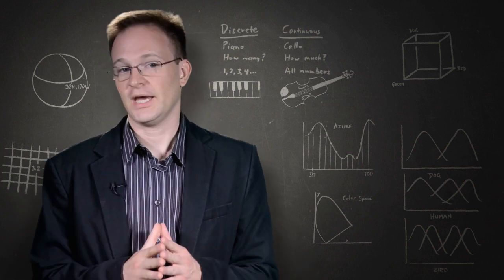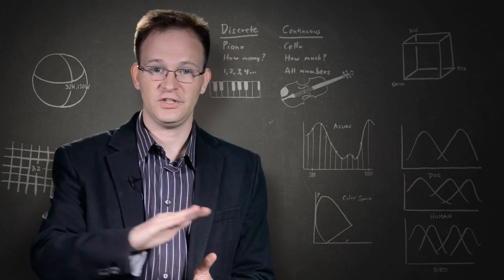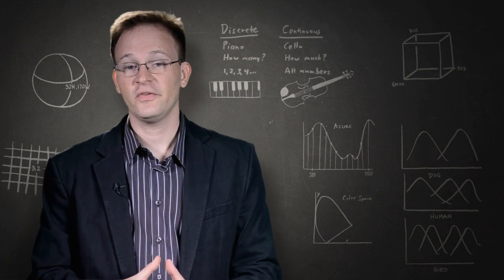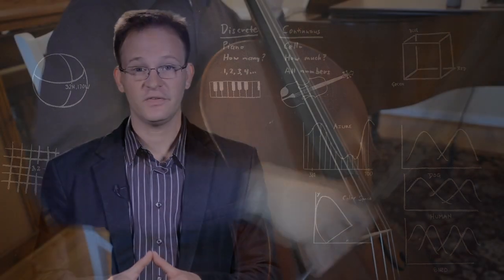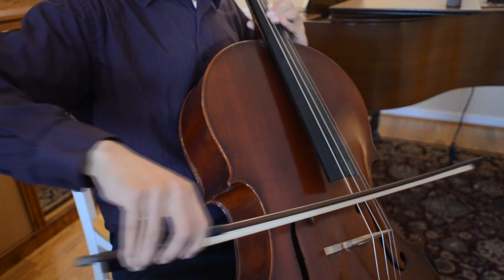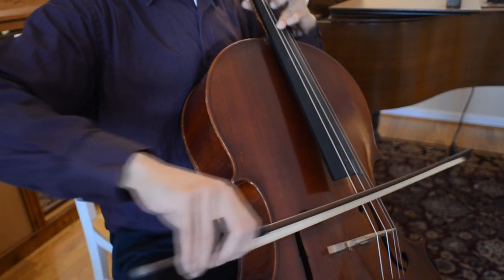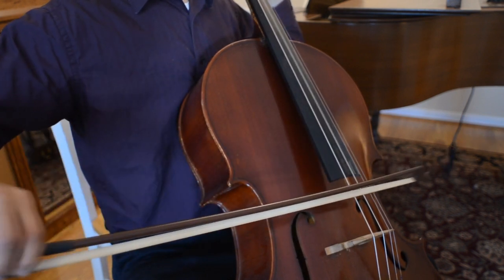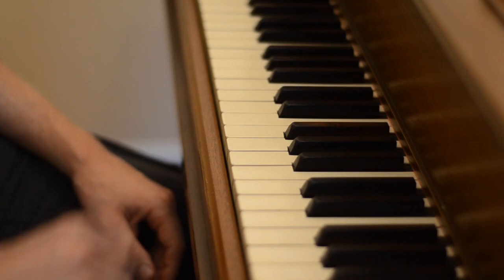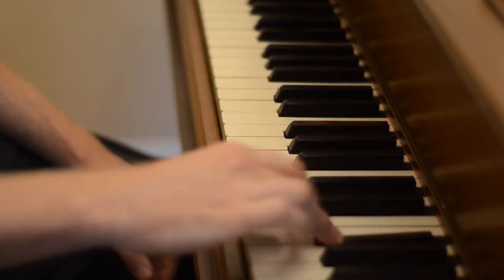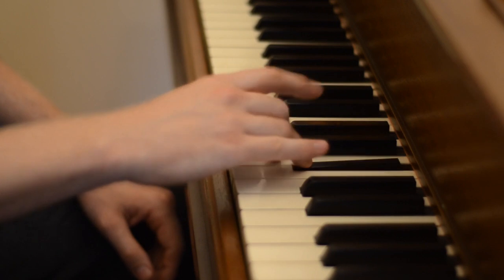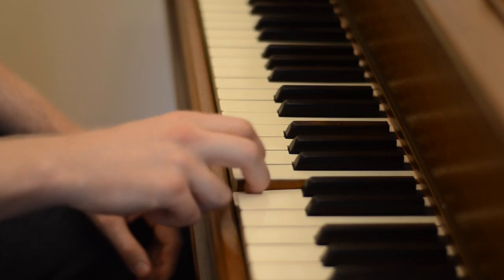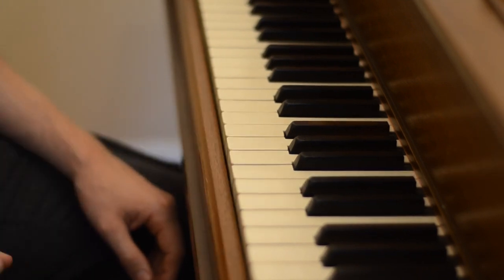Now, we can distinguish two different kinds of magnitudes, those that change continuously, and those which change in discrete jumps. As an example, the tones that can be played on a cello are continuous. While those on a piano are discrete.